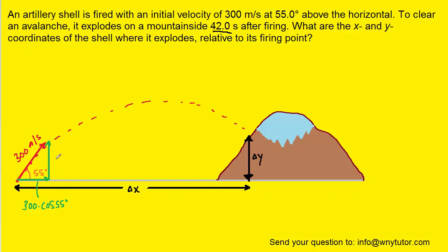The y component is opposite to the 55 degree angle. Therefore, we will be using the sine, and it will become 300 times the sine of the 55 degree angle. Once we have the x and the y components of the velocity, we can actually remove the original resultant velocity vector that was shown.